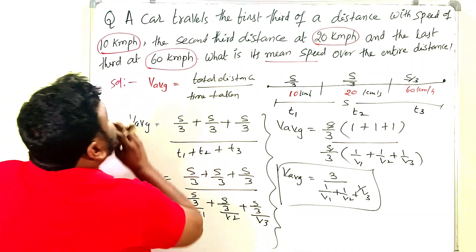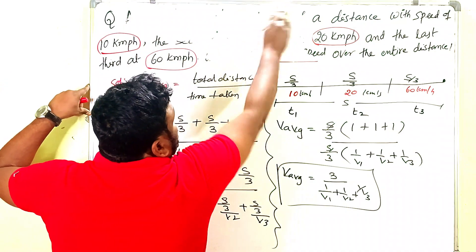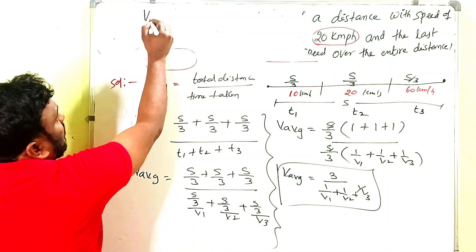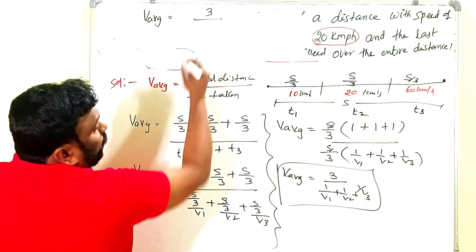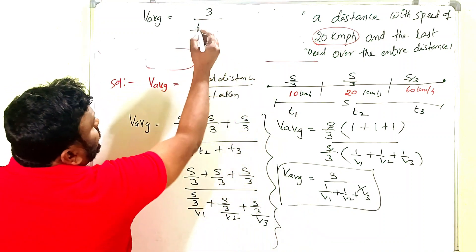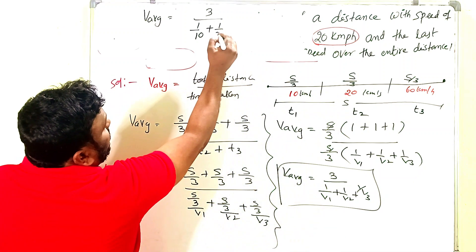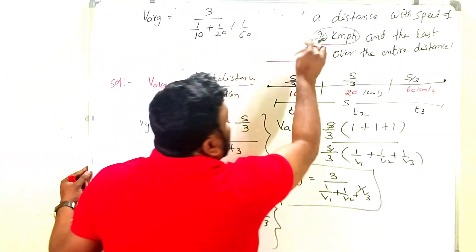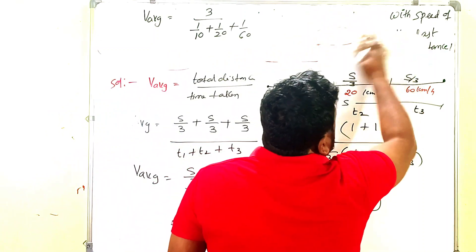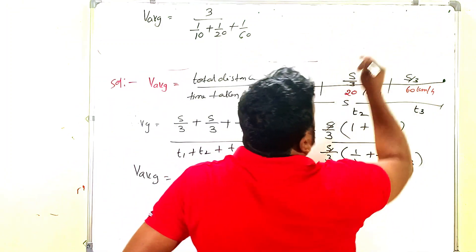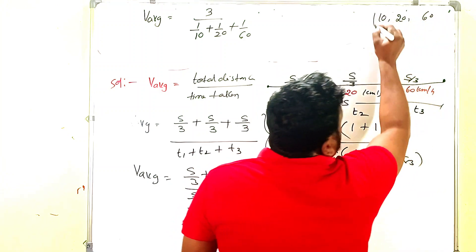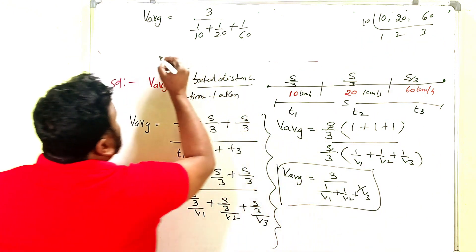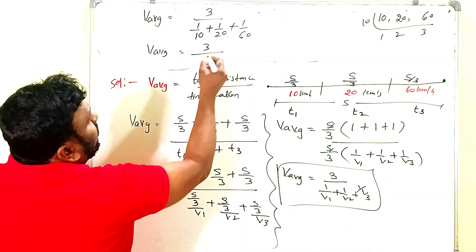Now substituting the values: v_average = 3 divided by (1/v1 + 1/v2 + 1/v3), where v1 = 10, v2 = 20, and v3 = 60 km/h. So v_average = 3 / (1/10 + 1/20 + 1/60). The LCM of 10, 20, and 60 is 60. Let's check: 10 × 6 = 60, 20 × 3 = 60, confirming LCM = 60.